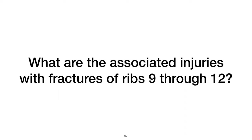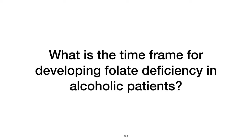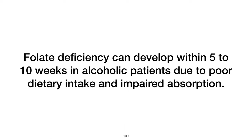What are the associated injuries with fractures of ribs 9 through 12? Fractures of ribs 9 through 12 are associated with liver, spleen, and kidney damage due to the location of these ribs near abdominal organs. What is the time frame for developing folate deficiency in alcoholic patients? Folate deficiency can develop within 5 to 10 weeks in alcoholic patients due to poor dietary intake and impaired absorption.